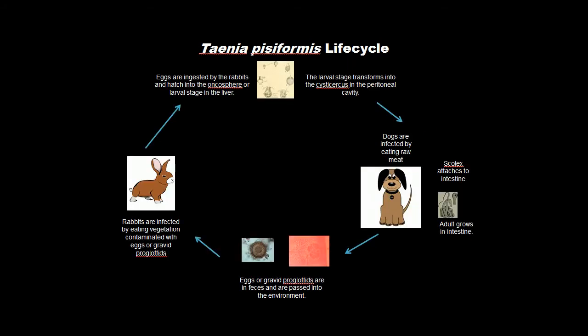Here is the life cycle of Taenia pisiformis. A dog is infected, and in its feces are eggs or gravid proglottids, and they are passed into the environment. Rabbits are infected when they eat vegetation that is contaminated with the eggs or proglottids.